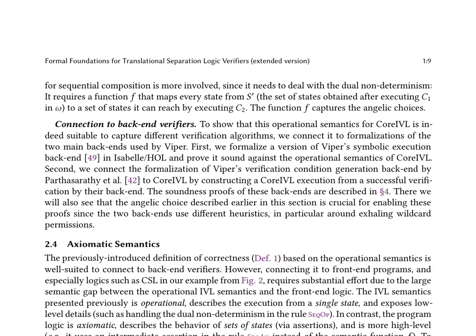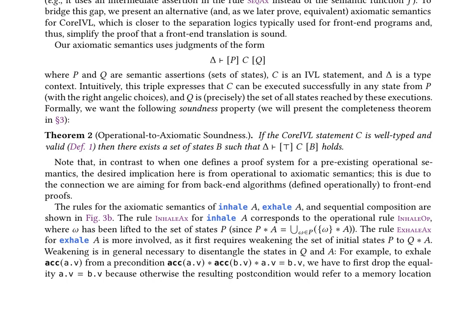The axiomatic semantics uses judgments of the form delta ⊢ {U1-D443} U1-D436 {U1-D444}, where U1-D443 and U1-D444 are semantic assertions (sets of states), U1-D436 is an IVL statement, and delta is a type context. The authors prove the operational-to-axiomatic soundness property, which states that if a core IVL statement is well-typed and valid, then there exists a set of states U1-D435 such that the judgment delta ⊢ {U1-D436, U1-D435} holds. The rules for the axiomatic semantics of inhale, exhale, and sequential composition are presented, abstracting over the low-level details of dual non-determinism in the operational semantics.